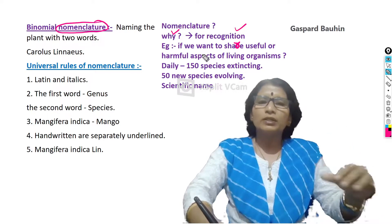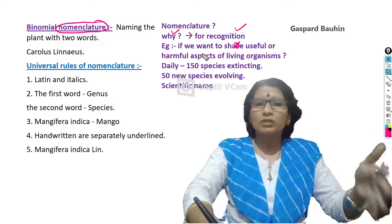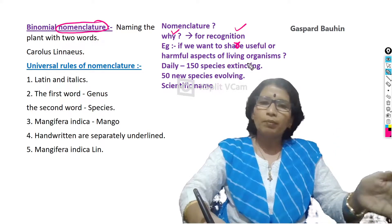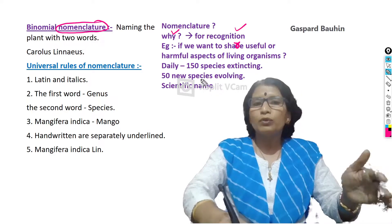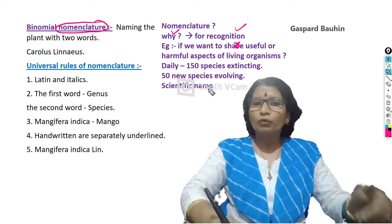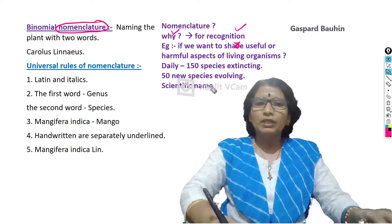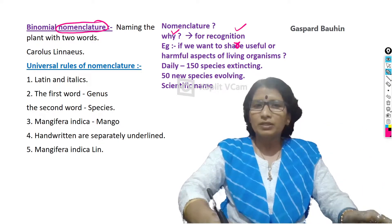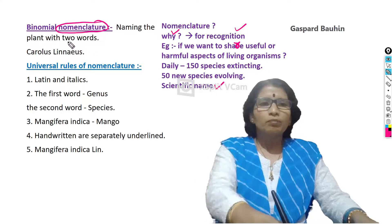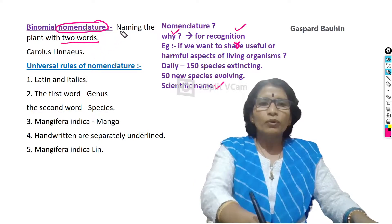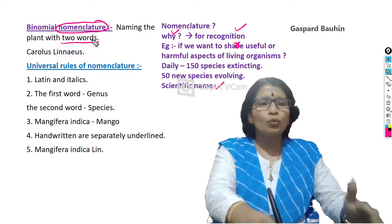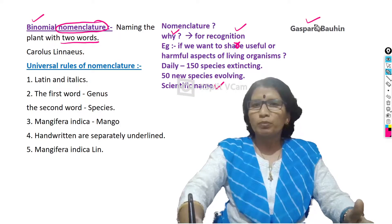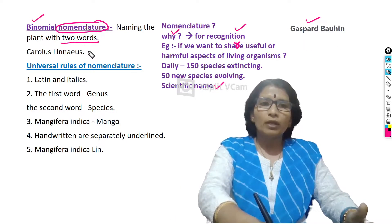Up to now, scientists have already given names to thousands of living organisms. Daily, nearly 150 species are going extinct, meaning completely disappearing, and 50 new species are evolving. Even though we have thousands of languages throughout the world, each and every living organism must have only one single particular name — we can call it a scientific name. This scientific name must have only two words. So, naming a plant or any living organism with two words is called binomial nomenclature. This was first proposed by Gaspar Bauhin, but followed and implemented by Carolus Linnaeus.